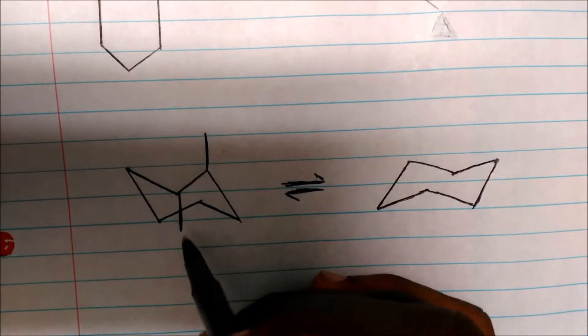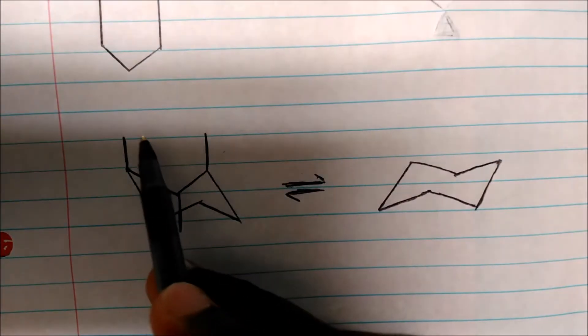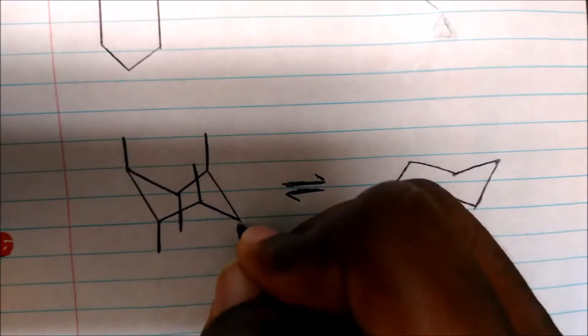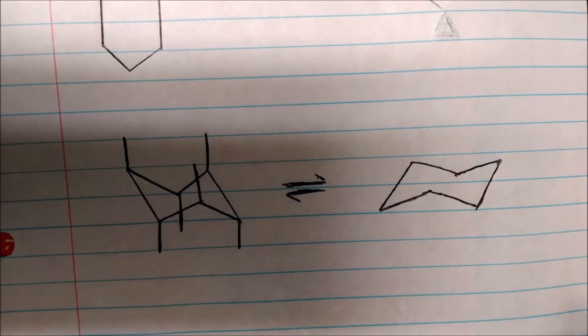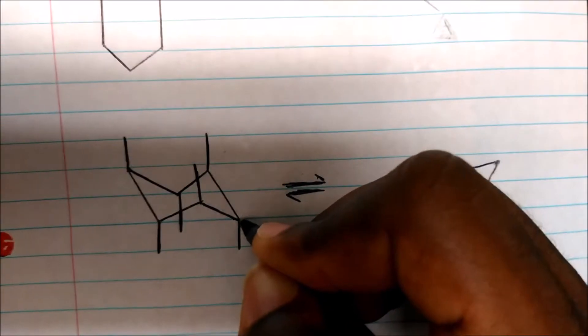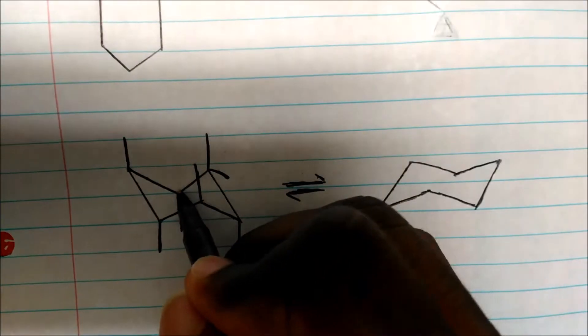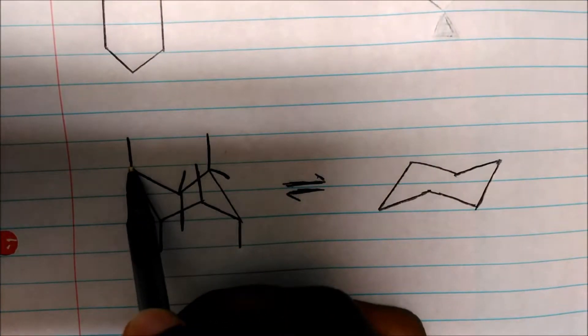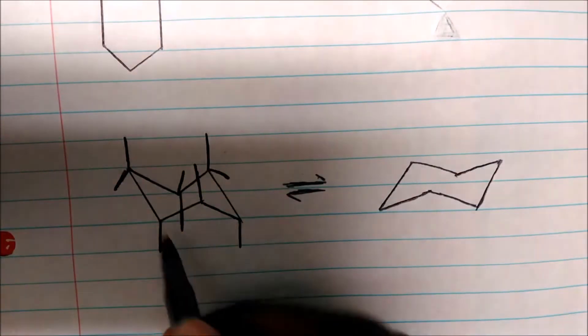Working around the ring: carbon 1 axial up, so carbon 2 axial down, carbon 3 axial up, carbon 4 axial down, carbon 5 axial up, carbon 6 axial down. Those are the axials. The equatorials are on the side and always opposite to the axial on the same carbon. Carbon 1 axial up means equatorial comes down; carbon 2 axial down means equatorial comes up; carbon 3 axial up, equatorial comes down; carbon 4 axial down, equatorial comes up.